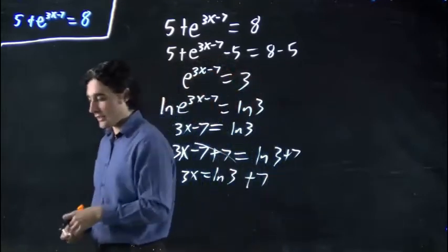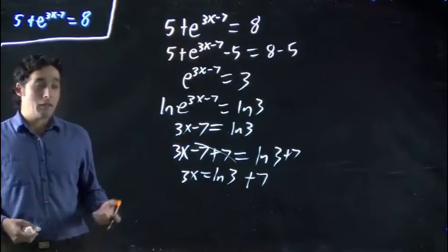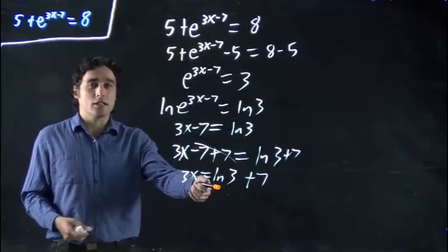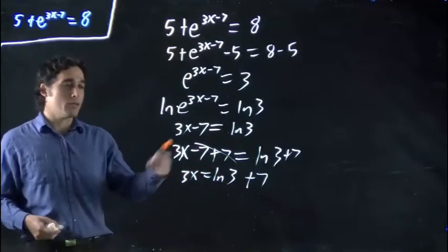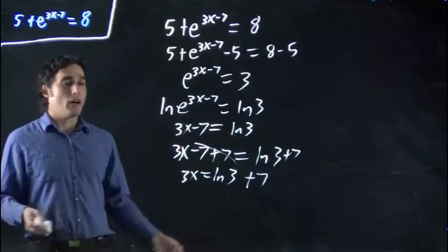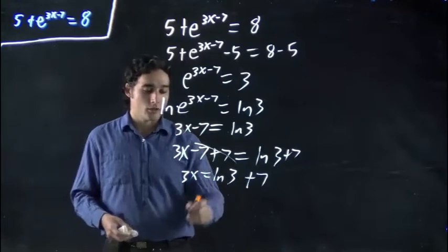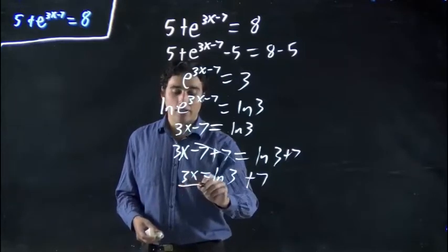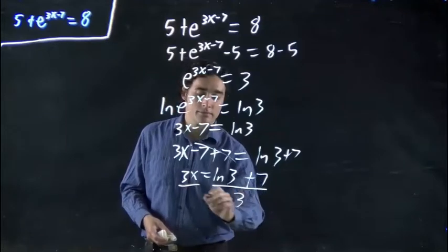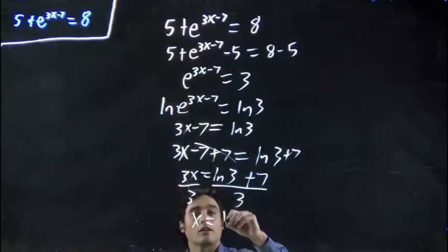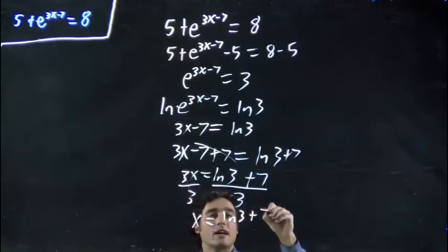Remember, ln of 3 is something we punch in our calculator and calculate. But if we want the answer to be more precise, we'll just leave it as ln of 3. This is going to be some weird decimal, 1 point something. Why convert to a decimal when we have a more exact answer right now? So ultimately, we want x on its own. Divide both sides by 3. This will cancel. And we get x equals ln of 3 plus 7, all divided by 3.